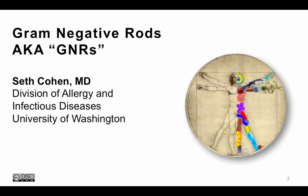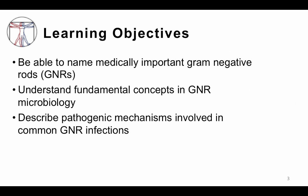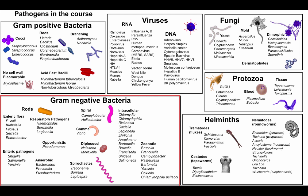Hi, this is Seth Cohen from the Division of Allergy and Infectious Diseases at the University of Washington, and we're going to be talking about gram-negative rods, a.k.a. GNRs. The learning objectives are to be able to name medically important gram-negative rods, understand the fundamental concepts in gram-negative rod microbiology, and to describe pathogenic mechanisms involved in common gram-negative rod infections.